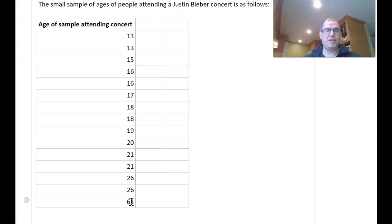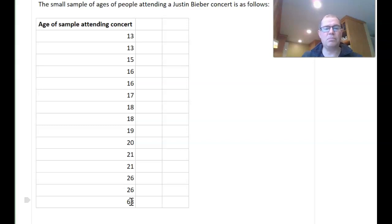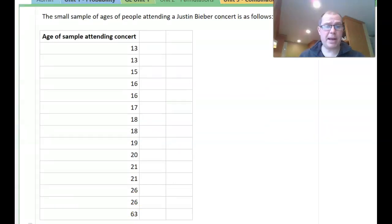Is 50 an outlier? 45? 30? I want you to write down what number you think — anything bigger than that number is considered an outlier. I'll pause the video whilst you do that. Hopefully you now have a number, whether it be 40, 45, 50 — anything above that number is an outlier. But there must be a mathematical way of measuring this.